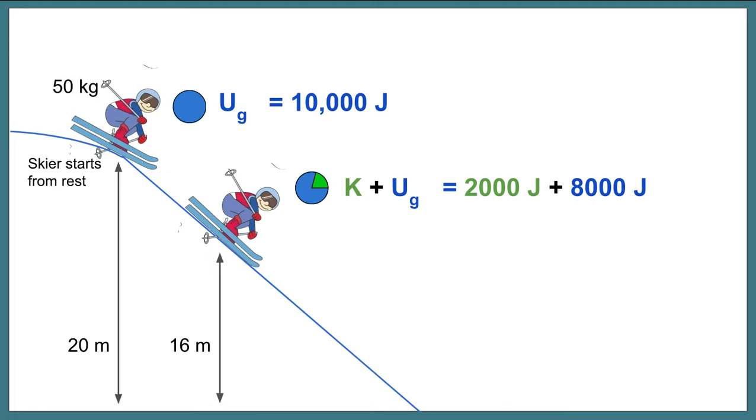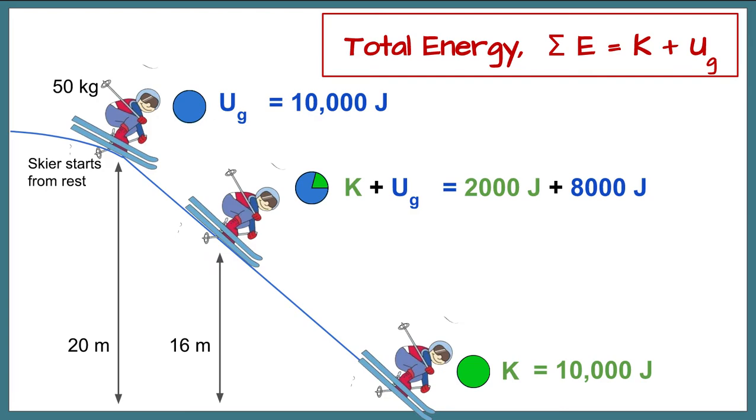We would be able to predict how fast the skier was going. When he gets all the way at the bottom, there is no potential energy. It's at its lowest possible point. So all of the energy is kinetic energy represented by this pie now being all green. We could then say that the kinetic energy at that moment is 10,000 joules, and we could determine from that how fast the skier is going. So this idea of conservation of energy by looking at the total amount of energy at any particular position, we are going to be able to predict certain things like how fast something is going.